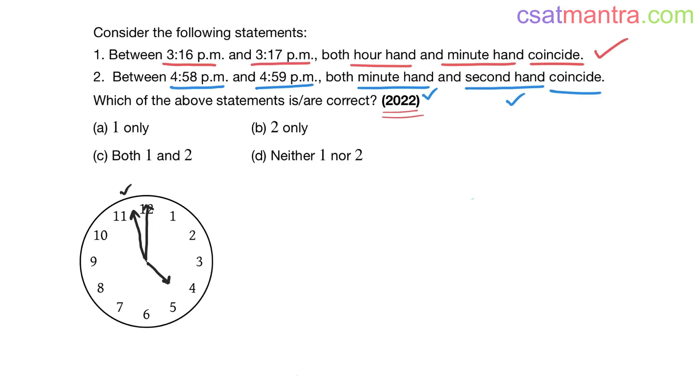Now seconds hand start moving. We are not concerned with hours hand here, okay, ignore it. So at some point of time between 58 and 59 minute, it will definitely cross, it will coincide with the minutes hand and it will cross, right? It has to, it definitely has to cross this minutes hand. So definitely both minute hand and second hand will coincide. So this is also true. Answer is C, both 1 and 2.